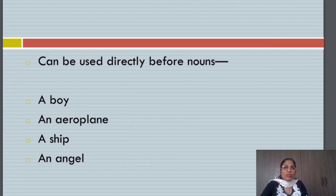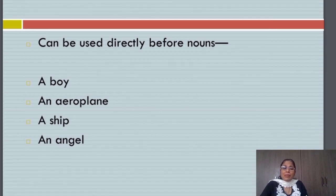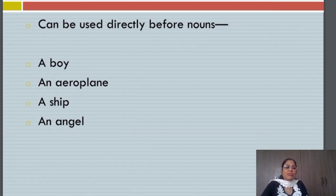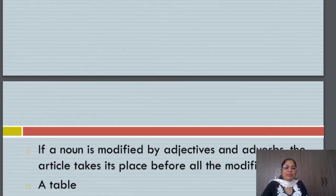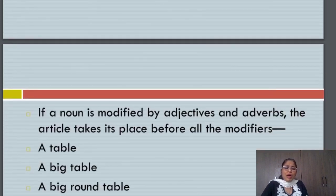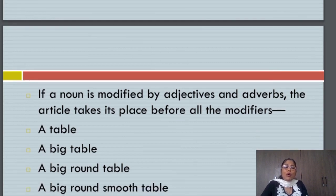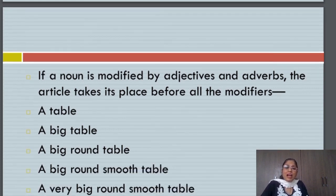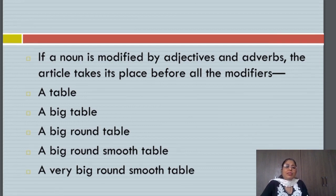Because nouns also take describing words in front of them. What if I have to say he is a fat boy? Then where do I place a? That might add to the complication of usage. If a noun is described or modified by adjectives and adverbs, the article takes its place before all of those describing words.